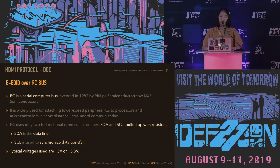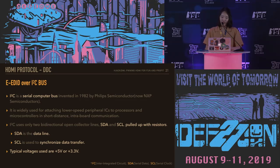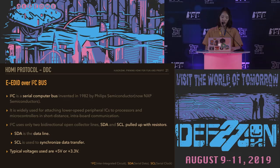HDMI transmits EDID data over the I2C bus. I2C is a serial computer bus widely used for attaching lower-speed peripheral ICs to processors and microcontrollers in short-distance intra-board communication. I2C uses only two bi-directional open-collector lines, SDA and SCL, pulled up with resistors. Typical voltages used are 5V or 3.3V, although systems with other voltages are permitted.